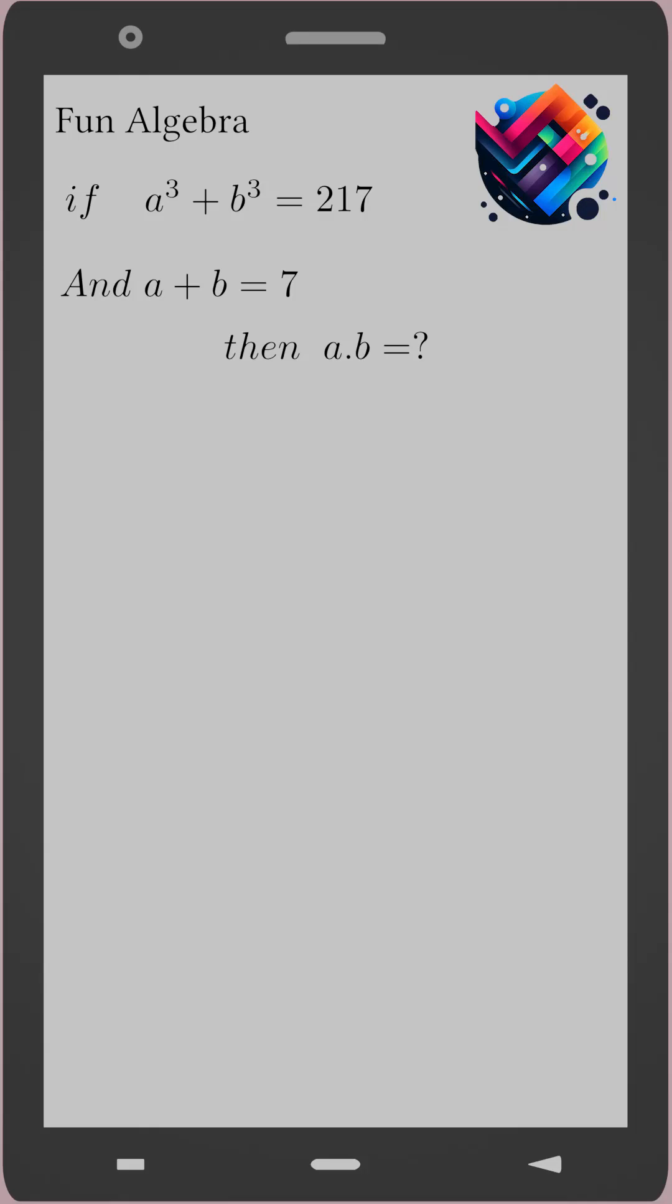In this problem, we have a³ + b³ = 217. We also have a + b = 7, and we need to find the value of a times b.